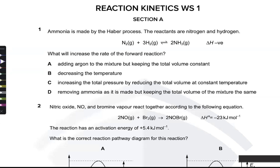A question asking what increases the rate of the forward reaction is really about yield. LCP tells us that whatever you do to the system, the equilibrium will try to undo it. Adding argon to the mixture — argon is an inert gas, it doesn't react — so all you're getting is an increase in volume or a change in pressure depending on how you add it. If you keep the total volume constant, you're adding more gas particles.